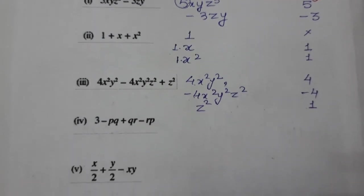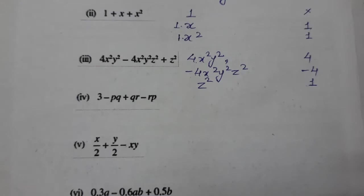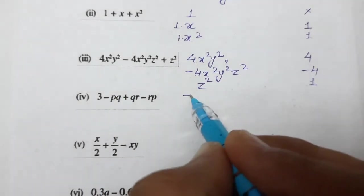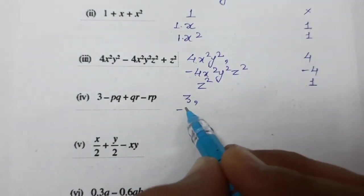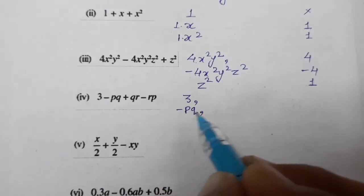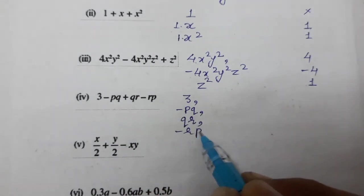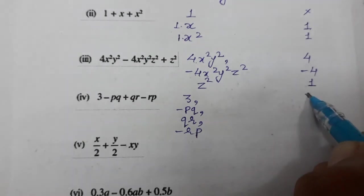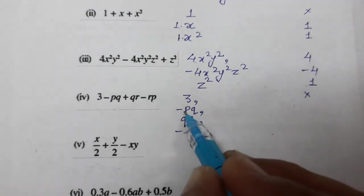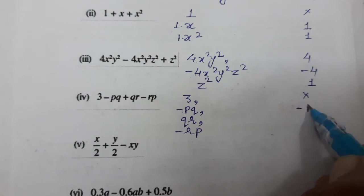Next question number 4: 3, then -pq, then qr, and then -rp. So 3, no need to write coefficient for constant term. So -pq means -1, qr means 1, -rp means -1.